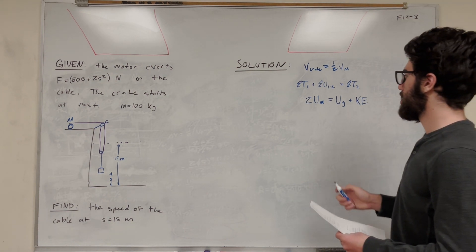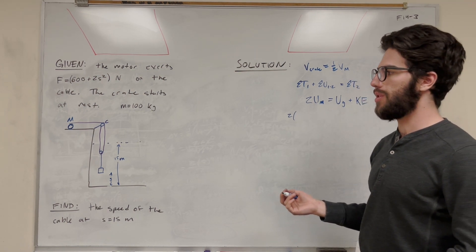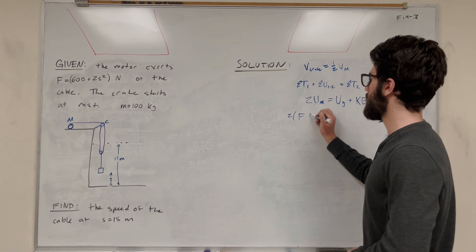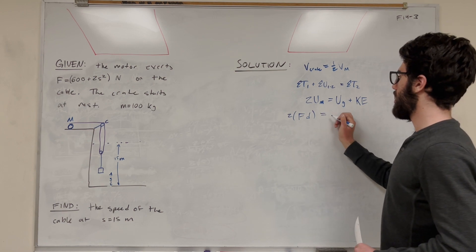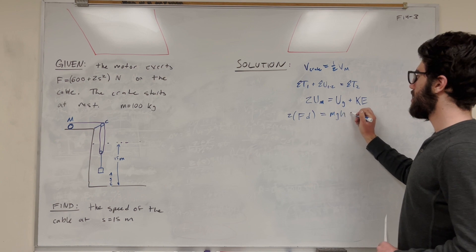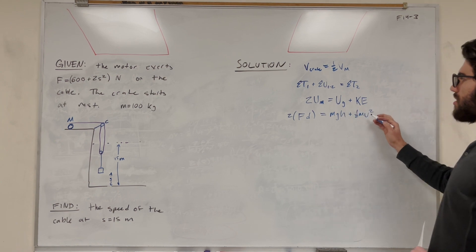Okay, so then let's expand this equation. So this 2 is going to stay up front. So the input of force, or the energy input from force, it's just going to be force times that distance. So we know that the distance is going to be about 15 meters. And then gravitational potential energy, mass, gravity, height, plus kinetic energy, one-half mass, velocity squared. So we're solving for velocity, so that's what we want to find.